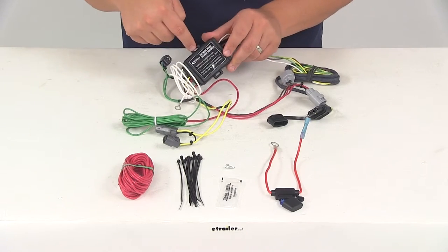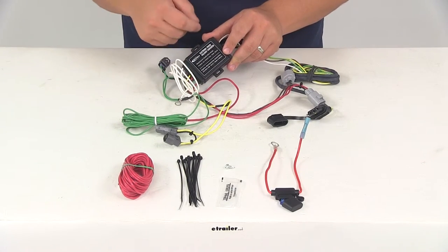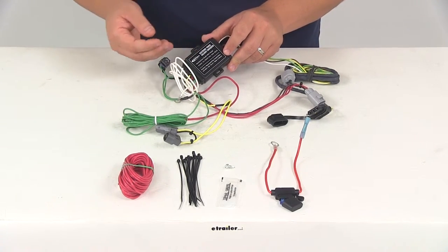It's got tabs located right here on each side. You can run your zip ties through there and secure it to an out-of-the-way location.